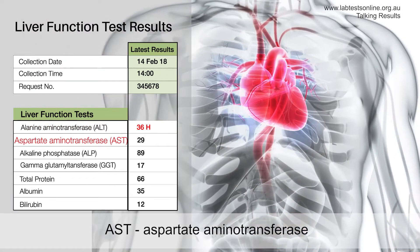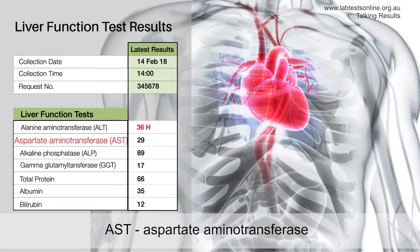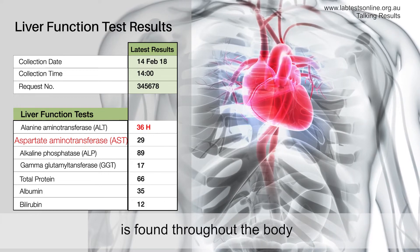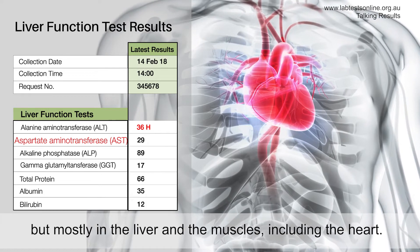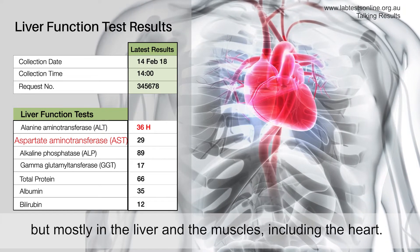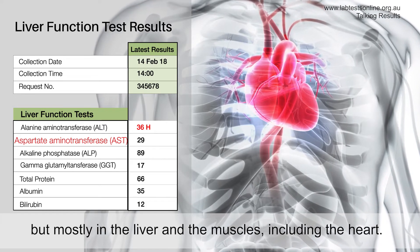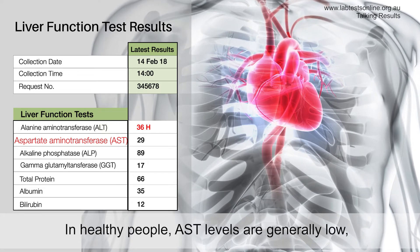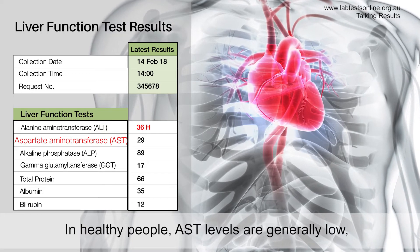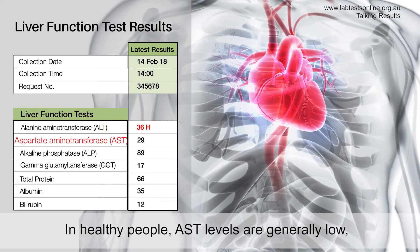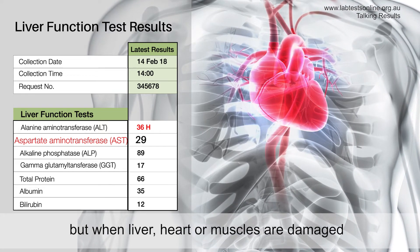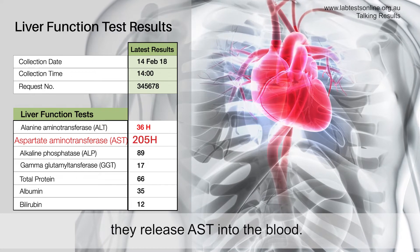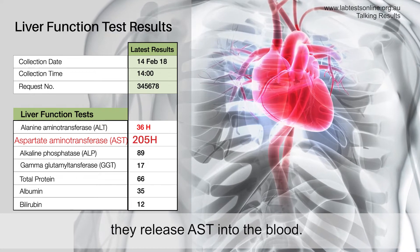AST, aspartate aminotransferase, is found throughout the body but mostly in the liver and the muscles, including the heart. In healthy people, AST levels are generally low, but when the liver, heart, or muscles are damaged, they release AST into the blood.